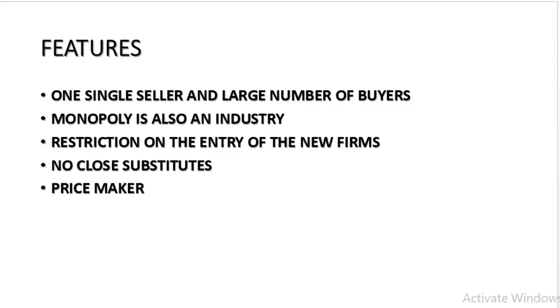Features of monopoly: one single seller, large number of buyers. Monopoly is also an industry. The monopolist takes one decision — either decide the price and the output is determined automatically, or decide the output and the price is determined automatically. There are restrictions, barriers, and obstacles on the entry of new firms. There is no close substitute, and the price is determined by the monopolist.